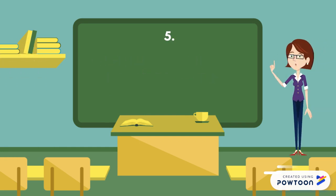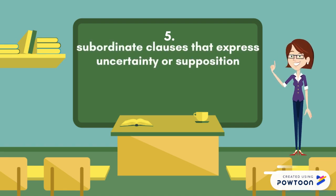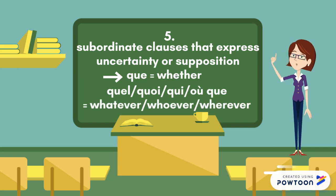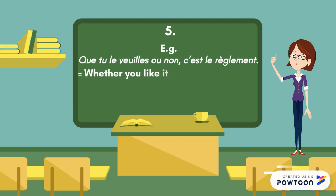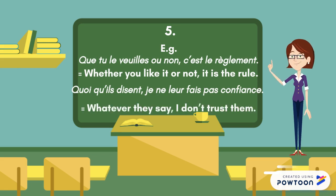The subjunctive is used in subordinate clauses that express uncertainty or supposition. They are introduced by 'que' meaning 'whether,' or by 'quel,' 'quoi,' 'qui,' 'où que,' meaning 'whatever,' 'whoever,' 'wherever.' For instance: 'Que tu le veuilles ou non, c'est le règlement' — Whether you like it or not, it is the rule. 'Quoi qu'ils disent, je ne leur fais pas confiance' — Whatever they say, I don't trust them.